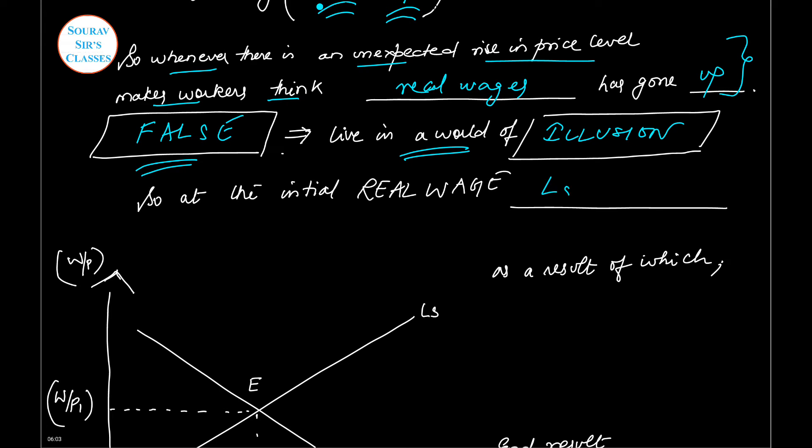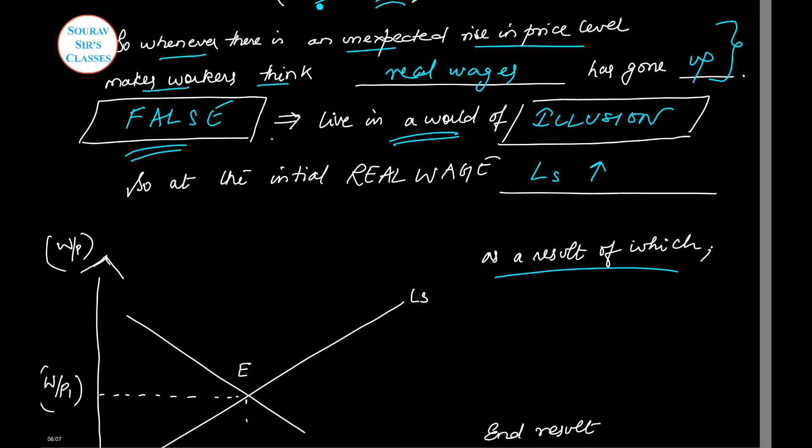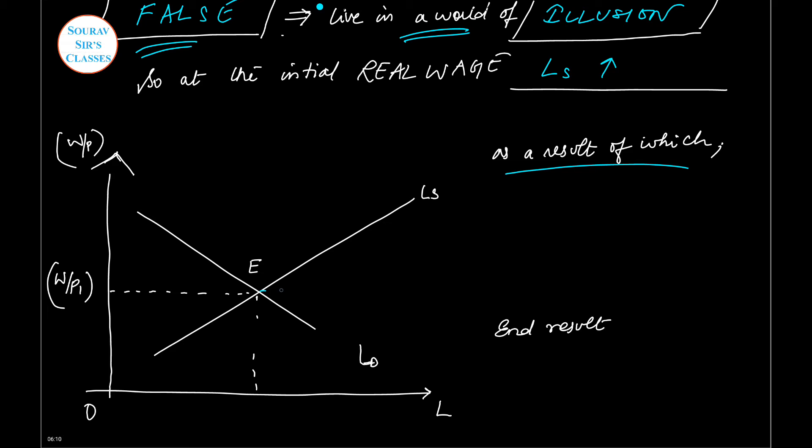So at the initial real wage, the labor supply will increase. So at the initial wage, you increase the labor supply. If this is L1, this is L2, and there is actually a reduction in real wage to W/P2. As a result we see that real wages fall. The end result is there is increase in labor demand from L1 to L2, increase in employment, increase in output, and therefore increase in income.